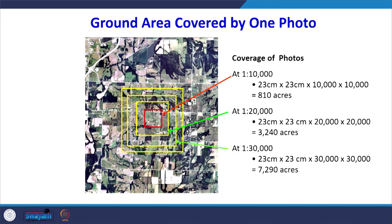On the photograph, at 1:10,000 scale, only a small red box area is covered by one photograph. Knowing the format is 23 cm × 23 cm, multiplying by the square of the scale gives the area. At 1:20,000 scale and 1:50,000 scale, the area increases substantially. As the scale changes, the area covered changes manifold, requiring many more photographs to cover a large area at large scale.